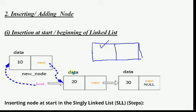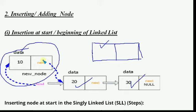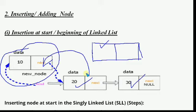But if it is not the first node — if there are already nodes in the list, say two nodes with data values 20 and 30 — then when inserting at the beginning, the new node's address should go into start, and the new node's link part should store the address of the previous first node. So the new node becomes the start node, and the previous first node becomes the second node.